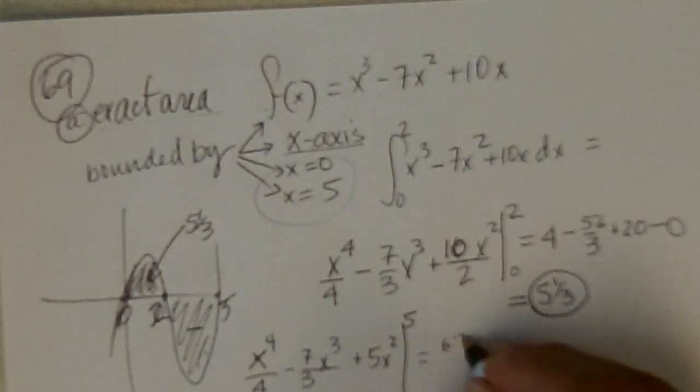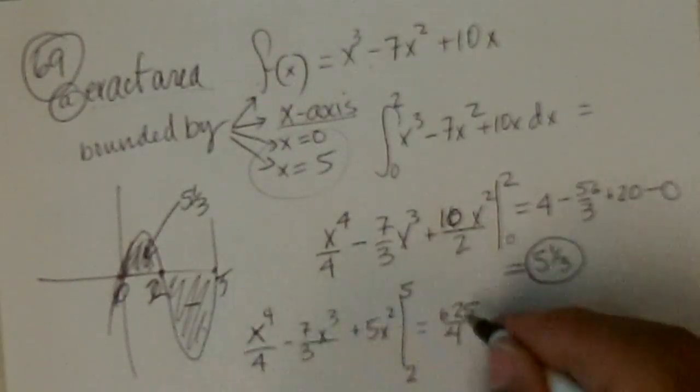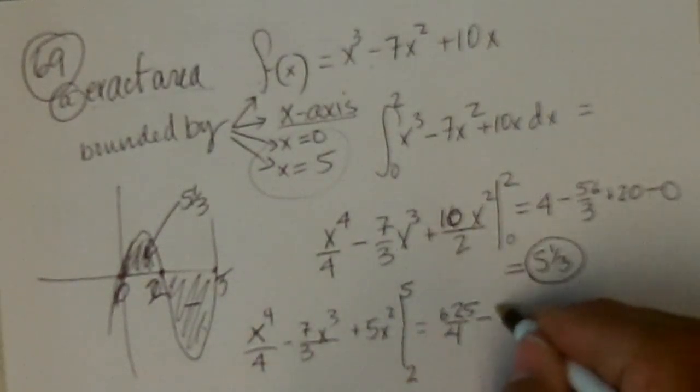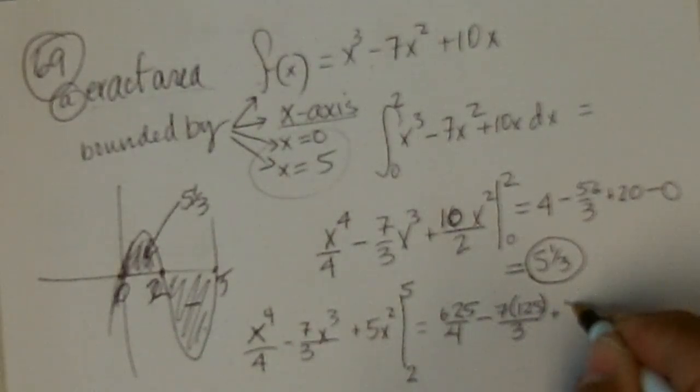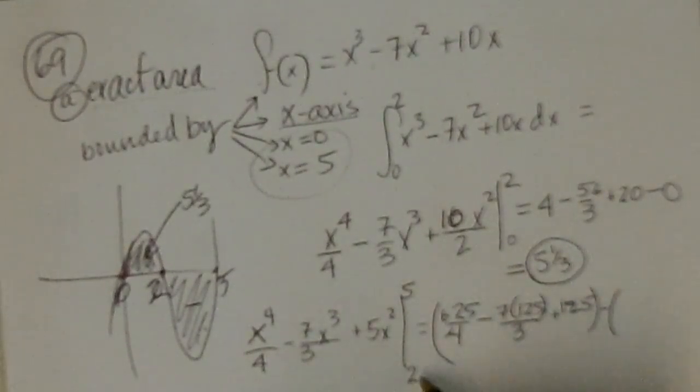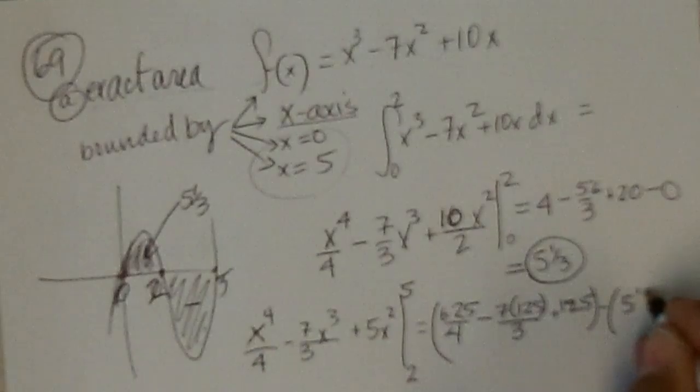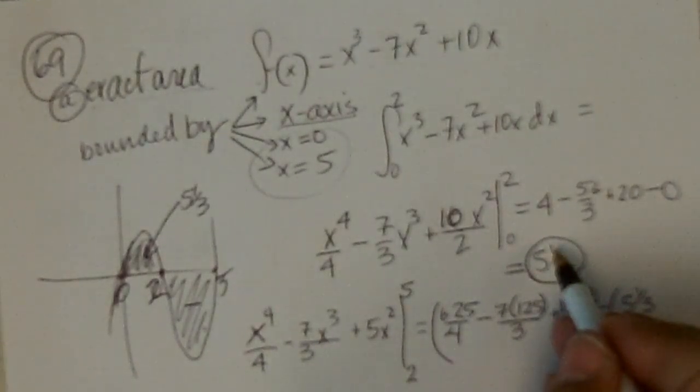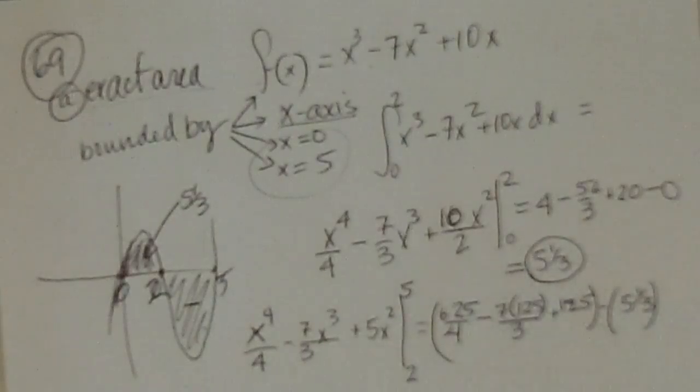Okay. Now, so I put in 5 first and I get 5 to the 4th is 625 over 4 minus 7 times 125, that's 5 to the third, over 3 plus 5 times 25 is 125. That's putting in the 5, then I've got to subtract what I get when I put in 2. Well, I put 2 in before and I got 5 and 1 third.